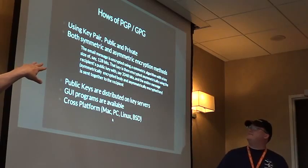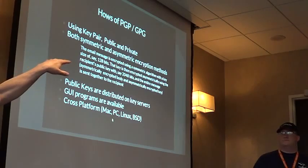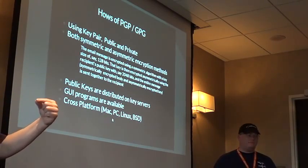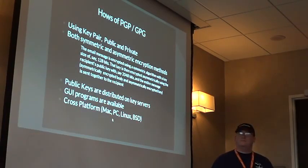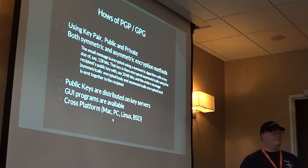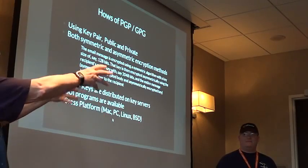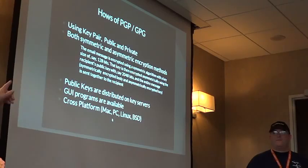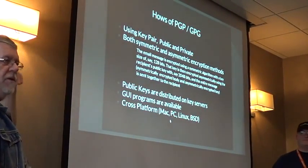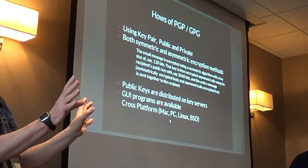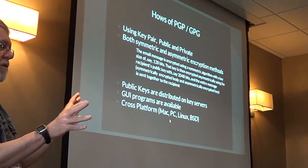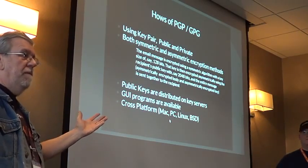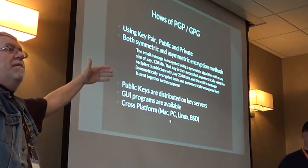Symmetric encryption is not as computationally intensive, so you can run it quickly. The problem is that you're sharing the key back and forth - if I send an email to Matt saying I want to communicate securely and include my encryption key, the NSA could hoover it up and read everything we do. The asymmetric public versus private key gets around that by using a one-way mathematical function - multiplying very large prime numbers together. That's called one-way because you can multiply them fast, but figuring out the factors from the huge result is very difficult.